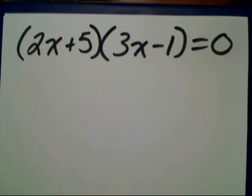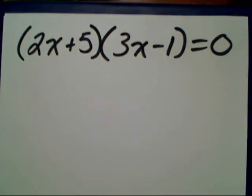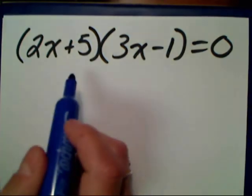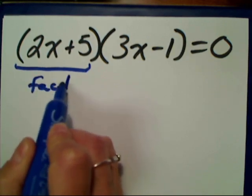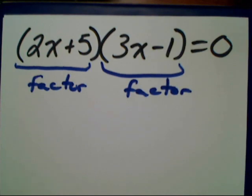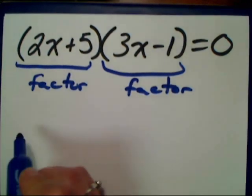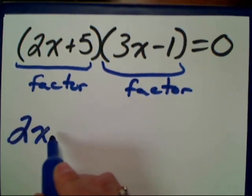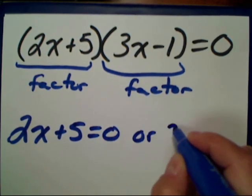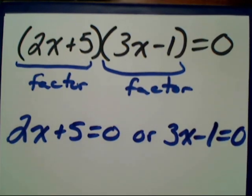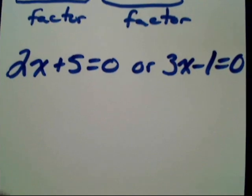Let's try another one. What if I had (2x + 5)(3x − 1) = 0? Because it's already equal to zero, I'm already in zero product property form, which states that either A or B has to be zero. Once I see a quantity times another quantity equal to zero, I know I can set the factors separately equal to zero and solve. That's the shortcut way of thinking about the zero product property.